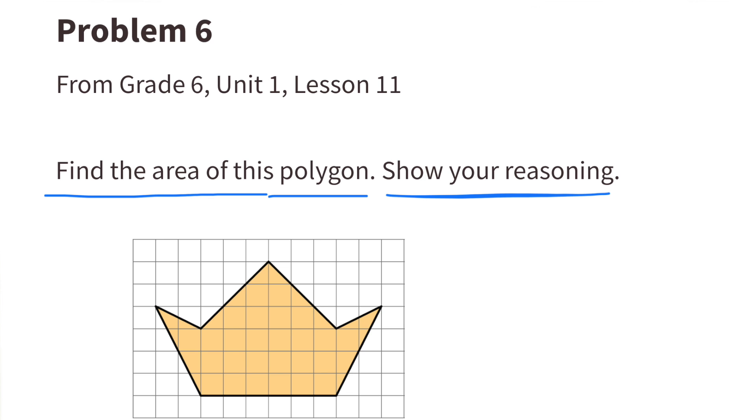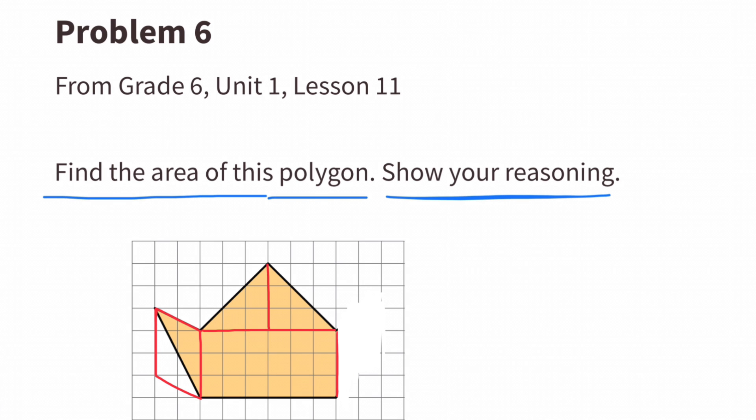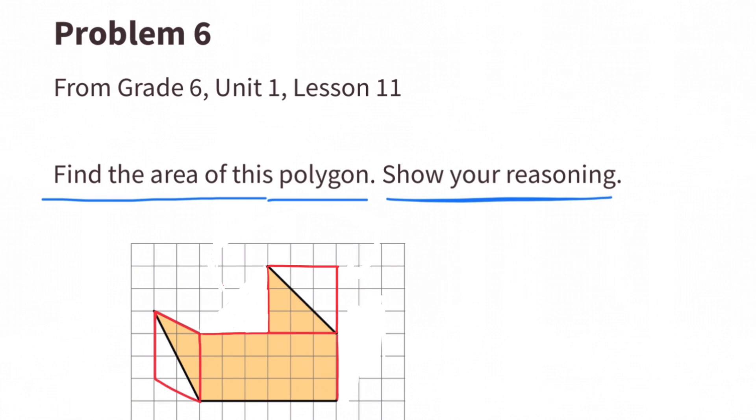First, I'm going to decompose and rearrange this shape, moving this triangle to the other side, forming a parallelogram. I'm also going to decompose this top triangle, making two smaller identical triangles, moving one of the triangles to the other triangle, forming a square.